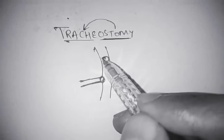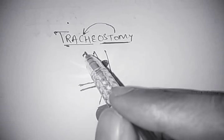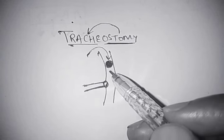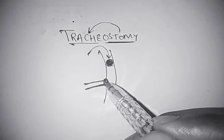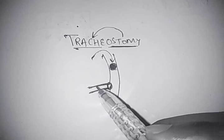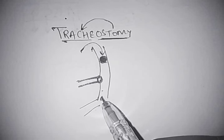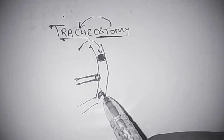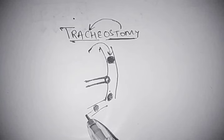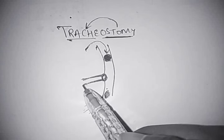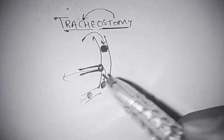Why do we perform tracheostomy? Suppose there is a foreign body present in the upper respiratory tract. Because of this foreign body, air cannot pass and the patient cannot breathe. To bypass this route, we perform tracheostomy, which provides an alternate pathway for breathing. Sometimes individuals have retained secretions in the lower respiratory tract — secretions collected in the tracheobronchial tree — and because of these, the patient cannot breathe, so we do tracheostomy to remove them and improve lung ventilation.